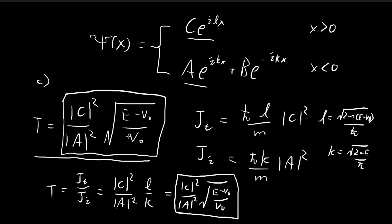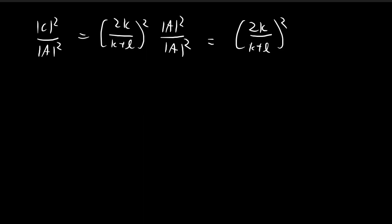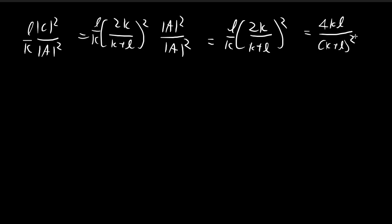For the transmission coefficient, we also need to multiply by the L/k factor. I'll use L/k directly since everything is in terms of L and k. So tacking on L/k to (2k/(k+L))²: the 2k squared gives 4k², and multiplying by L/k cancels one k, giving 4kL divided by (k plus L)². So the transmission coefficient T equals 4kL/(k+L)².